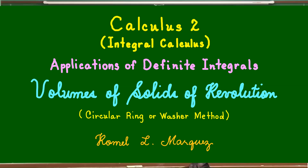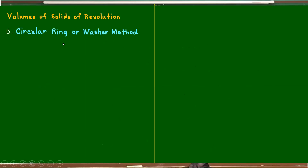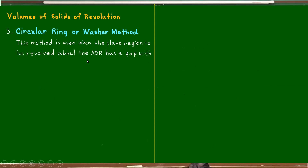Good day guys. Today I'm going to continue my discussion on volumes of solids of revolution by integration. This time I'll be using the circular ring or washer method. This method is used when the plane region to be revolved about the axis of revolution has a gap with the axis of revolution.